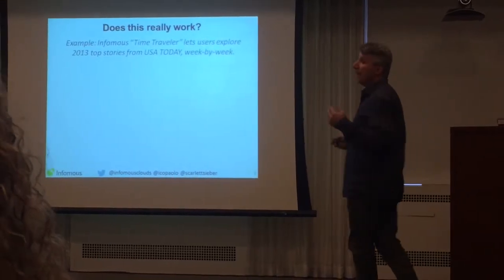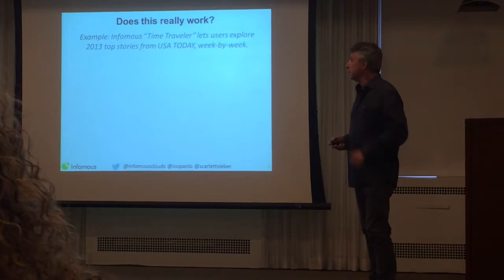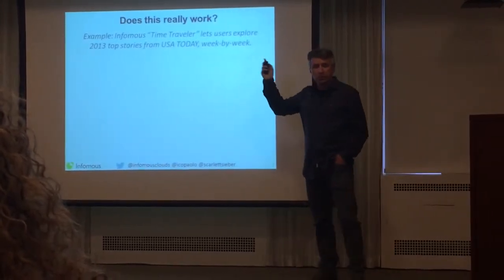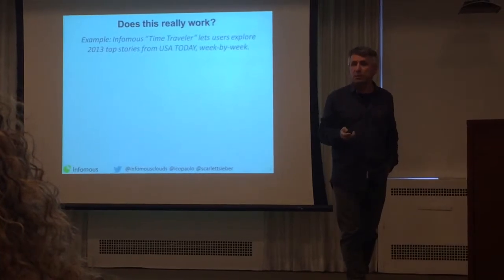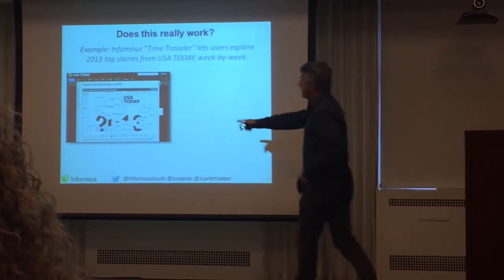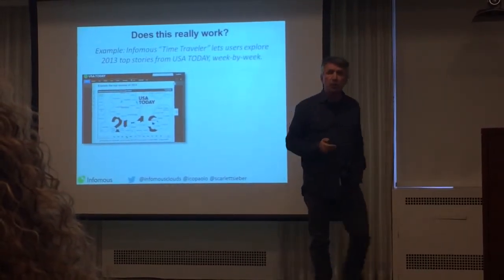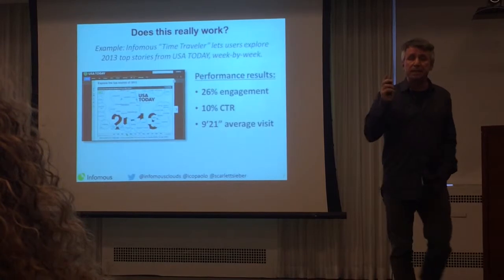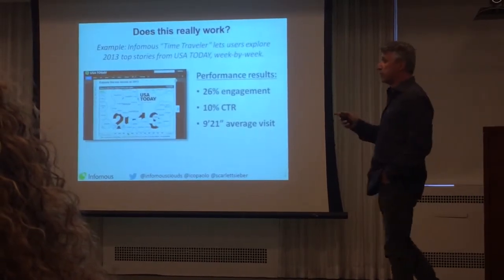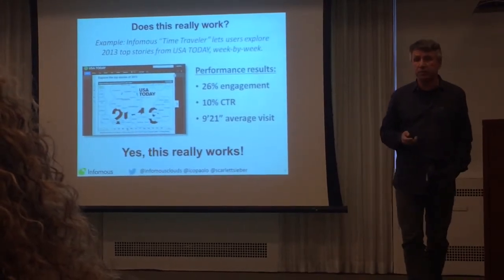What is our go-to-market strategy, and does this really work? We always get asked about this. Here's one example: we launched the Time Traveler Cloud for readers of USA Today at the end of 2013. We took about 5,000 stories from the year and created a cloud with a timeline underneath that lets you go week by week through the entire year. How did it do? 26% engagement, 10% click-through rates, and 9.5 minutes on the page — pretty astronomical numbers. So yes, it really works.